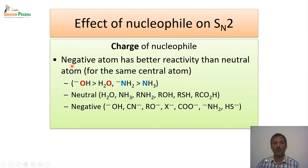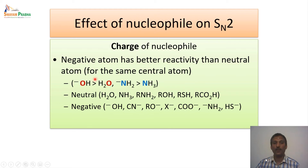So let us look at the charge of the nucleophile. The negative atom has a better reactivity than a neutral atom, as long as we have the same central atom. For example, if you have the neutral nucleophile such as water, the oxygen is the central atom, and we have a hydroxide ion which is negatively charged. So between water and hydroxide ion, water is a poor nucleophile compared to hydroxide, which is a stronger nucleophile. The same way when we compare ammonia or amine with NH2-, NH2- is a much stronger nucleophile compared to the neutral amine or ammonia molecules. The same way, alcohol is also a very weak nucleophile compared to alkoxide ion. So what we can say is, if there is a negative atom, it is a much stronger nucleophile than the neutral atom, as long as we compare with the same central atom.